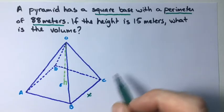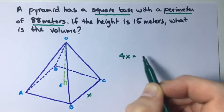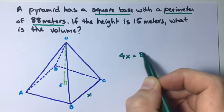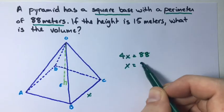We know the perimeter of a square is 4x equals perimeter, and the perimeter is 88. So we can say x is 22.